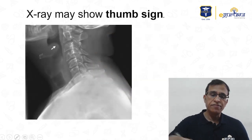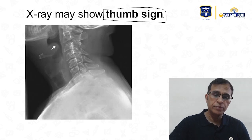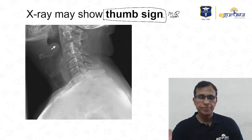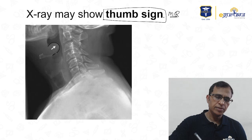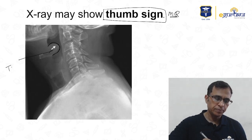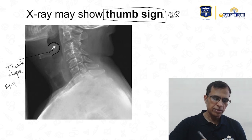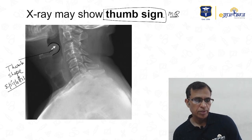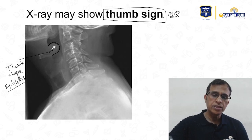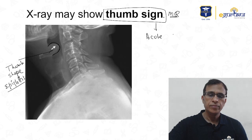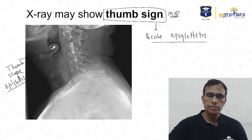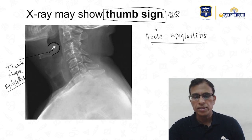This is the thumb sign — the epiglottis is thumb-shaped. The disease associated with this sign is acute epiglottitis.